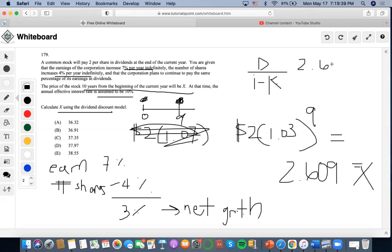Which is 2.069 over the effective interest rate that was already given of 10%, and the net growth of 3%.